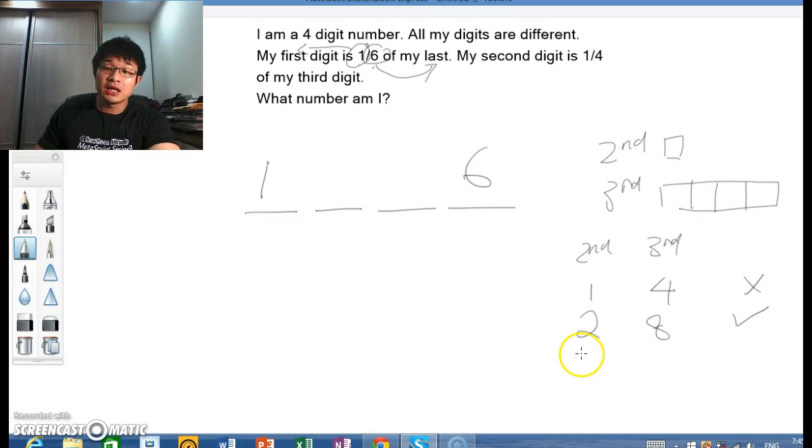We want to be very sure. If the second is 3, then the third will be 12. Can we have this? No, because it needs to be a single digit, and here we have 12. Therefore, the answer is 1,286.